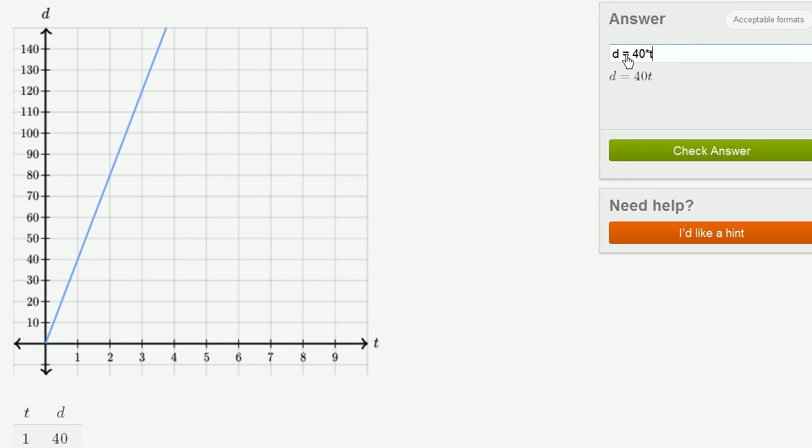So I can either write it as 40 with a little asterisk sign, which is shift 8, and then I put t there. Or I could literally put just a t right over there.